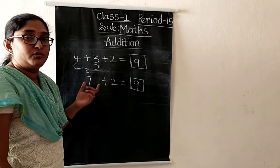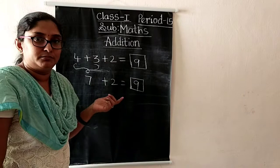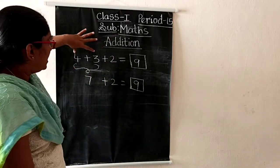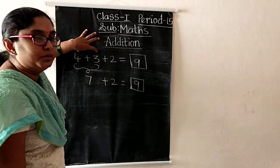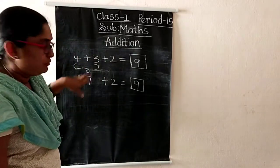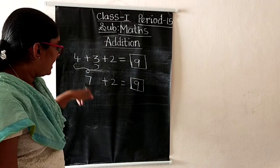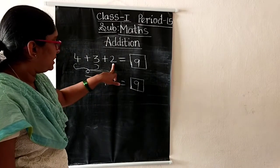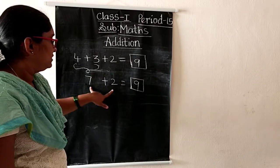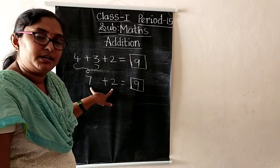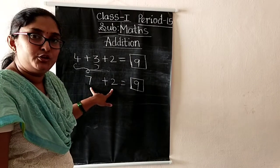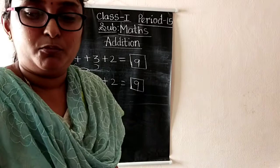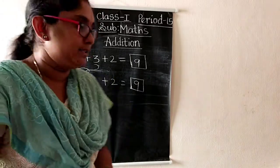So like this you have to add three numbers. First we add two numbers to get one answer, and then that answer and the remaining number we add again. Did you understand? Okay, I will give you one more example.